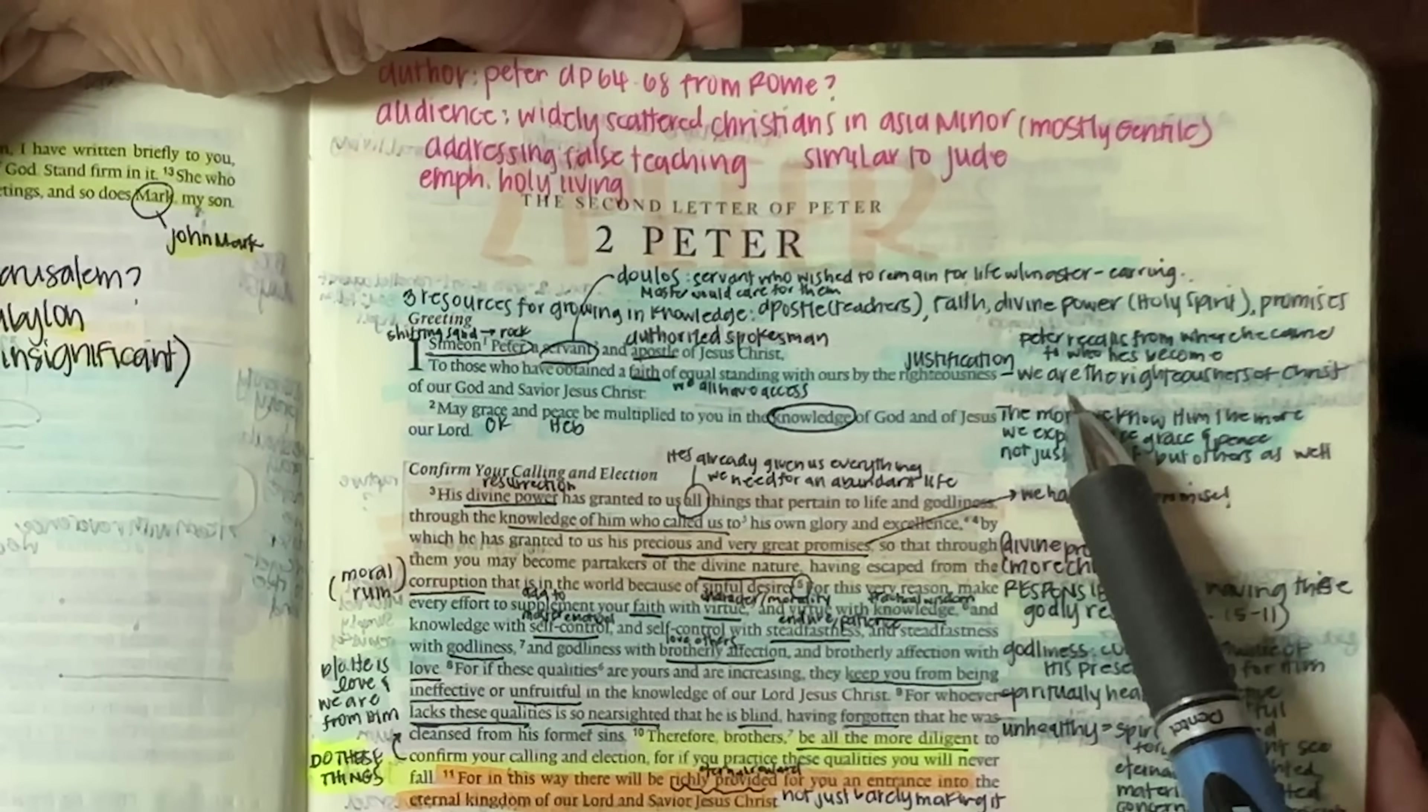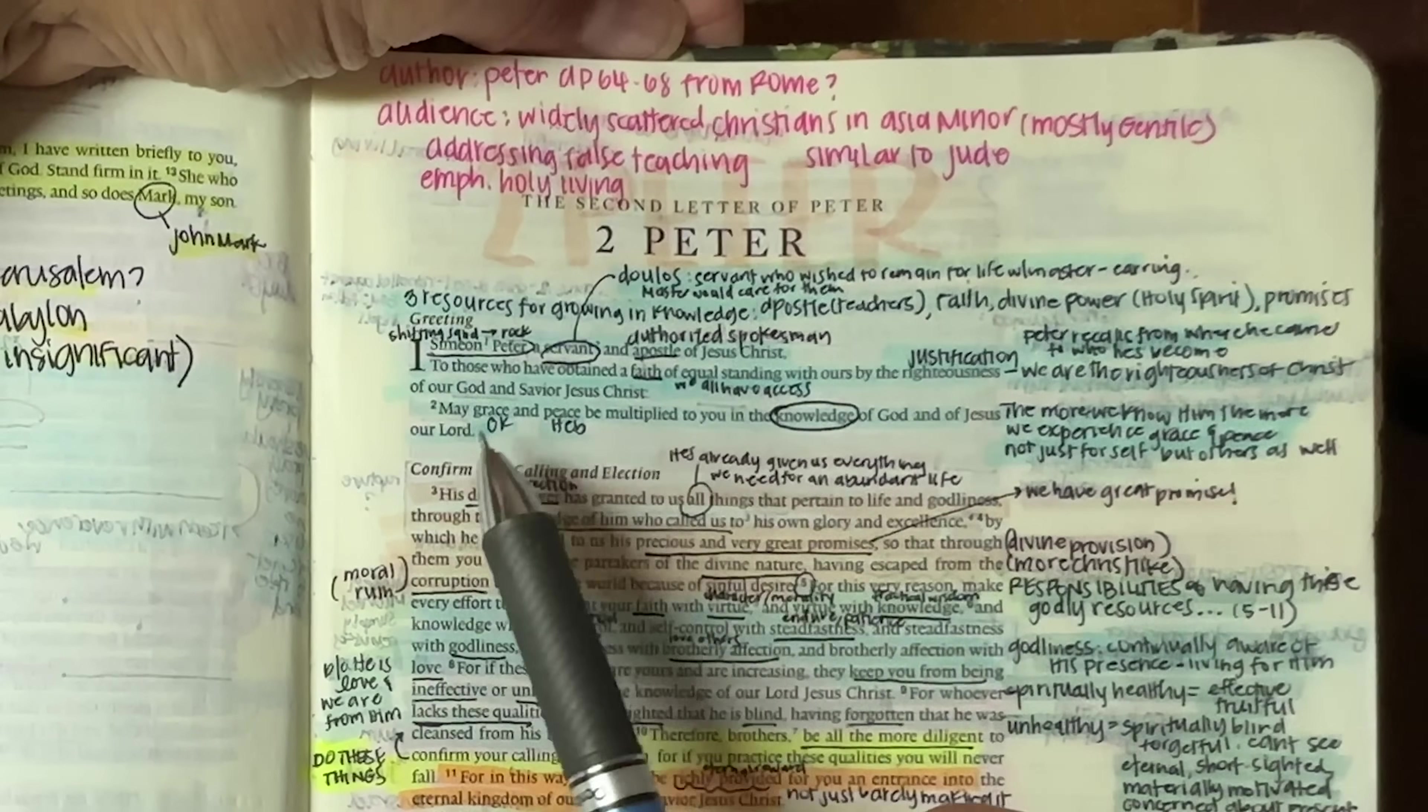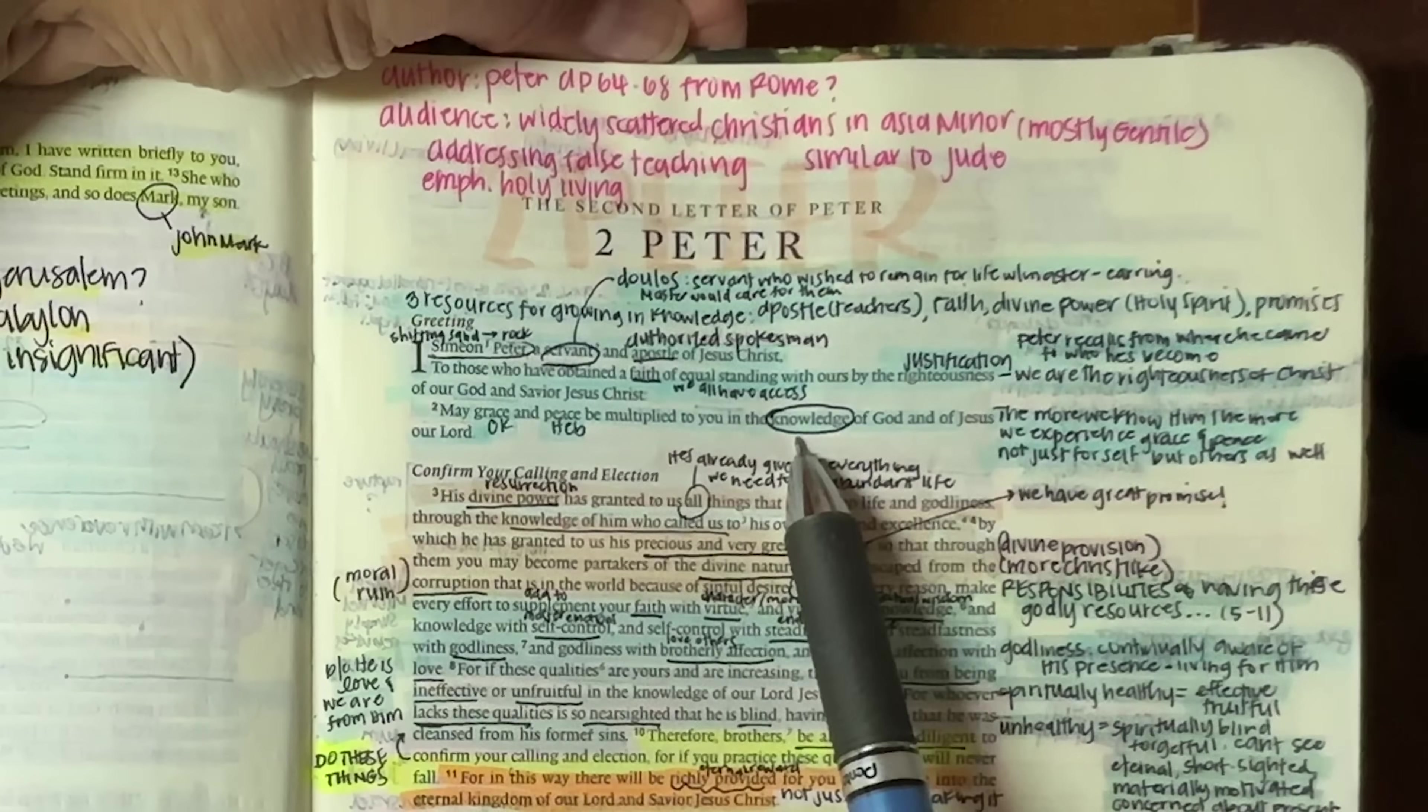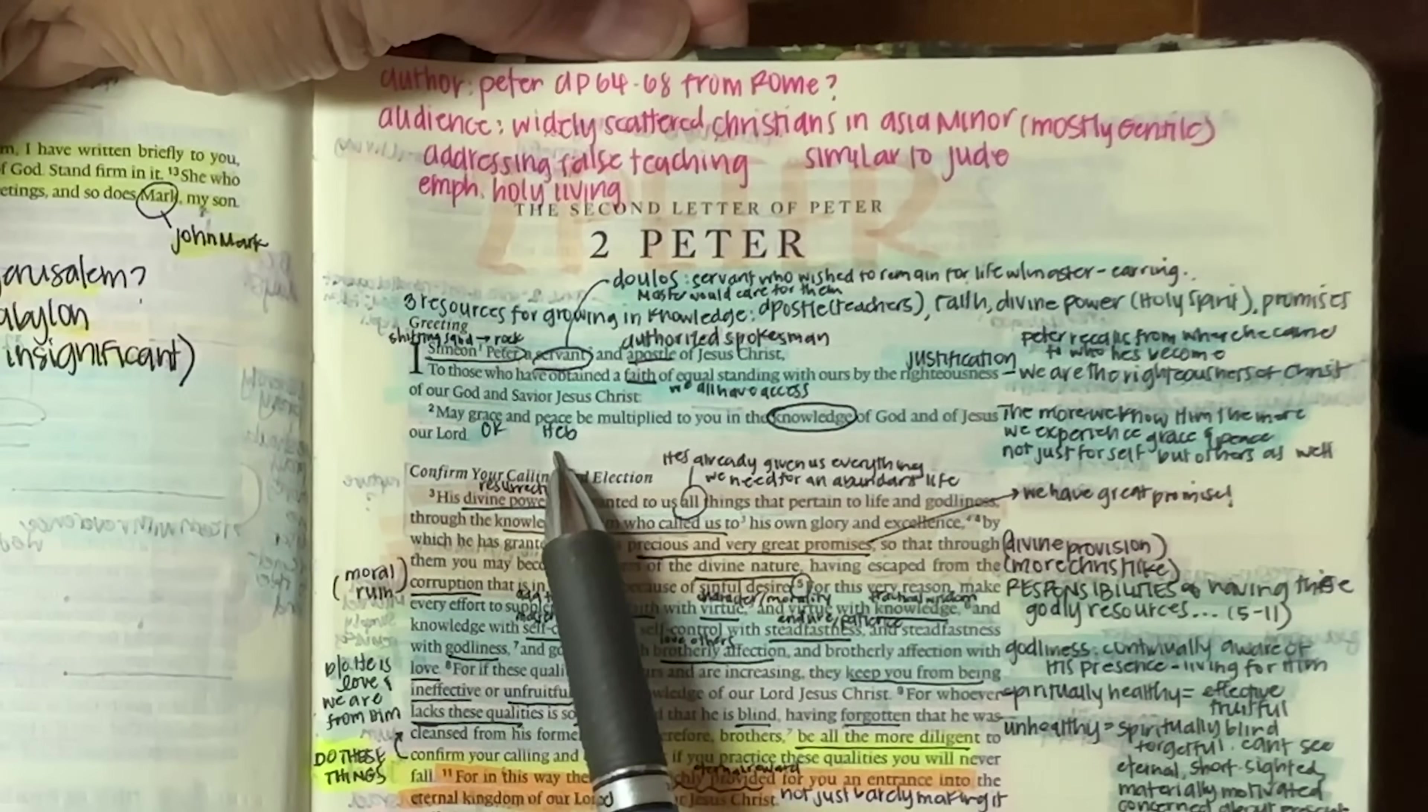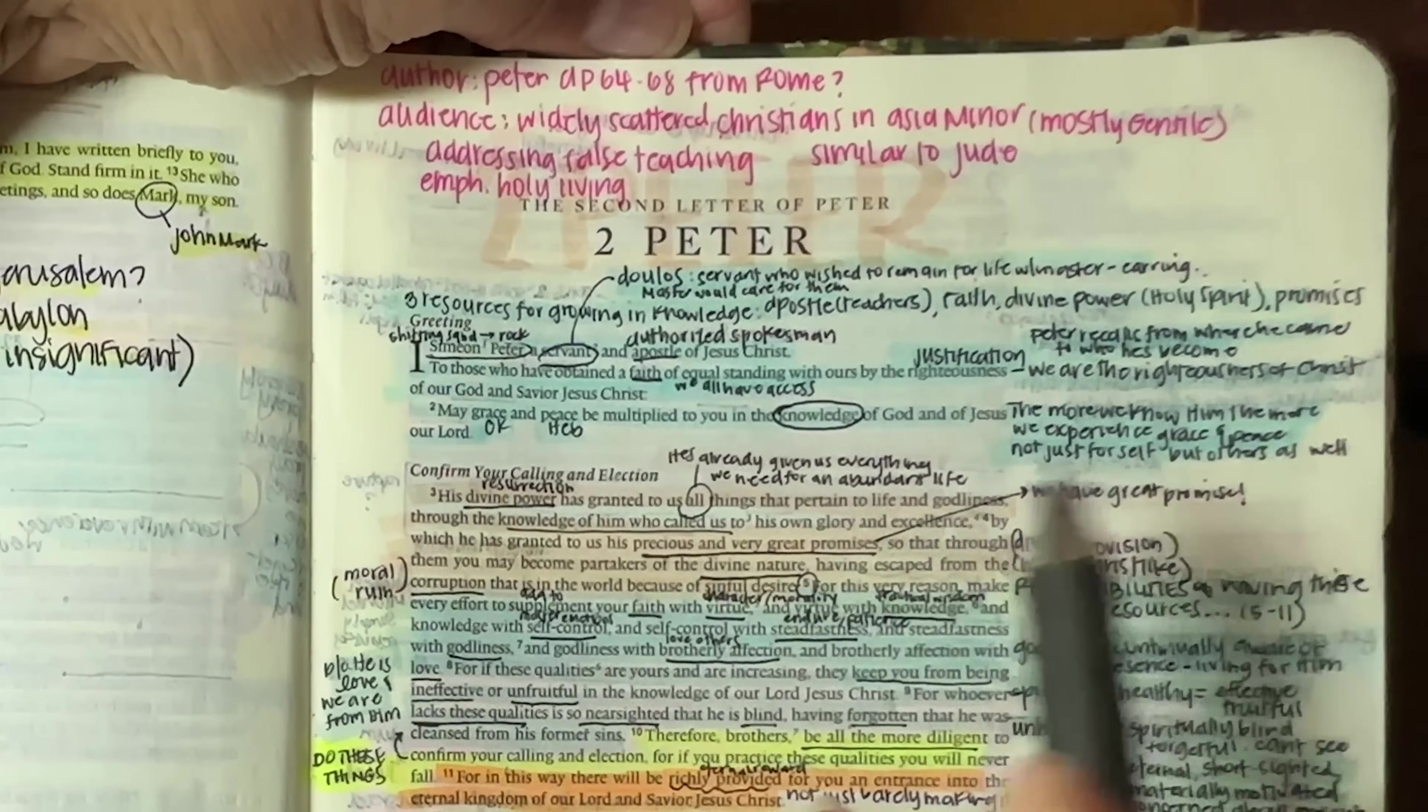So we are the righteousness of Christ. And that is why we too are also able to stand on that same holy ground. May grace and peace be multiplied to you in the knowledge of God. By the way, this will be the biggest term of this epistle, knowledge of God and of Jesus, our Lord. So remember grace and peace were typical greetings that they would often use. Grace being from the Greek greeting, and then peace being a Hebrew greeting, shalom.